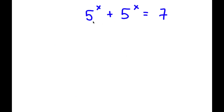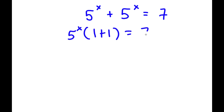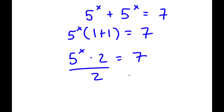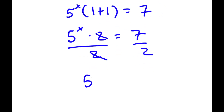In this problem, I have 5 to the power of x plus 5 to the power of x is equal to 7. The first thing I'm going to do is factor out 5 to the power of x from the left-hand side. So now I have 5 to the power of x times 1 plus 1 is equal to 7. Since 1 plus 1 is 2, I have 5 to the power of x times 2 is equal to 7. Dividing both sides by 2 gives 5 to the power of x is equal to 7 over 2.